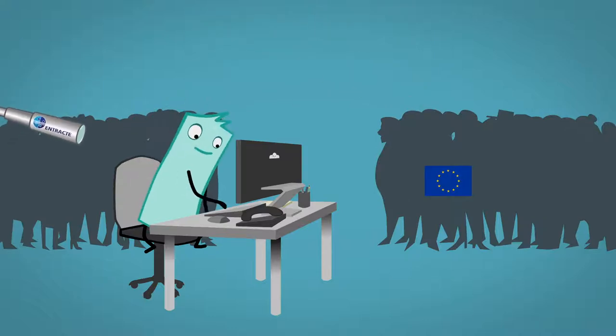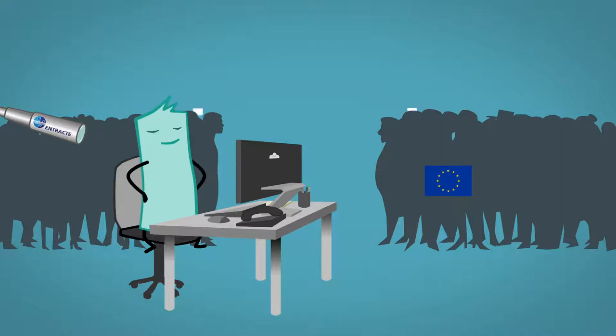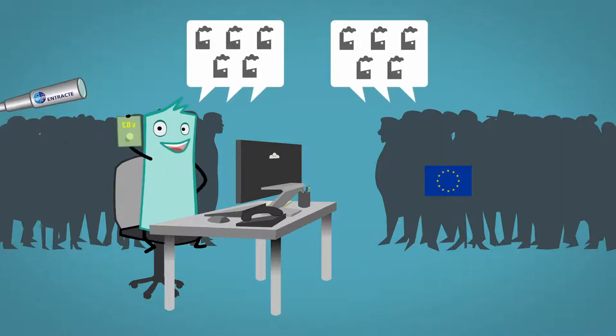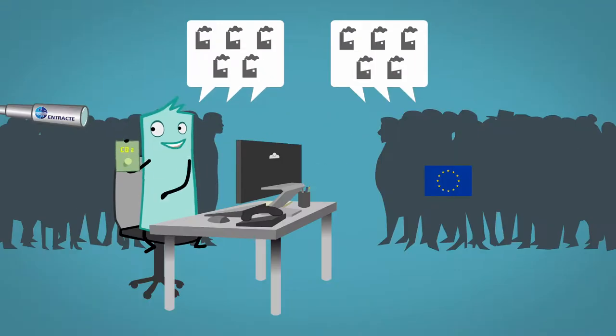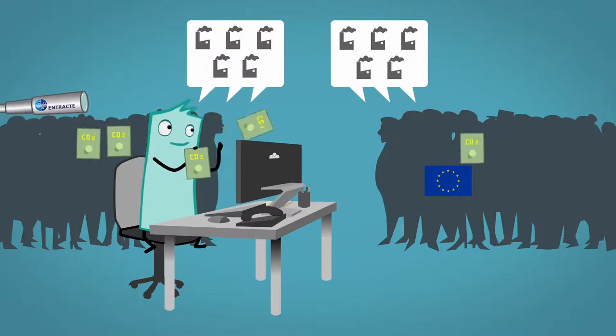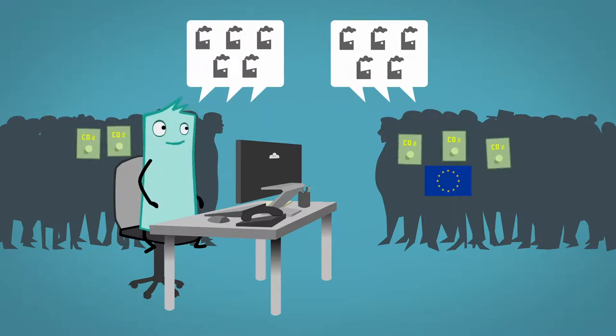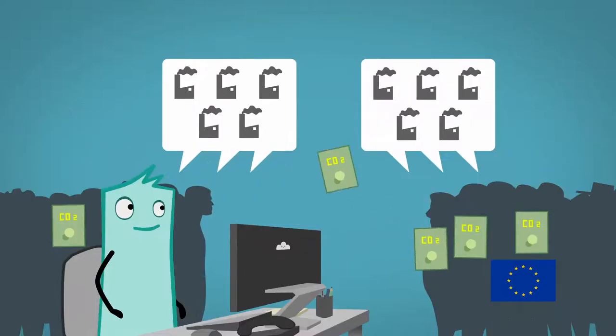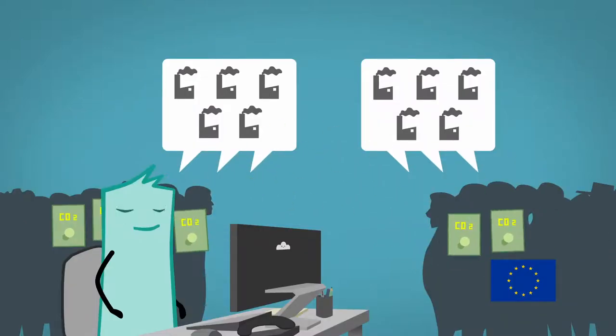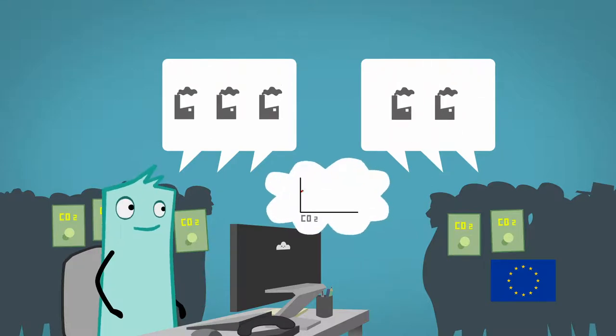Let's take a closer look at one specific example – emissions trading. To reduce CO2 emissions, the European Union distributes a limited number of emission allowances. These tradable permissions to emit CO2 ensure that a certain maximum in emissions will not be exceeded and that at the same time CO2 emissions will be reduced where it's most beneficial.